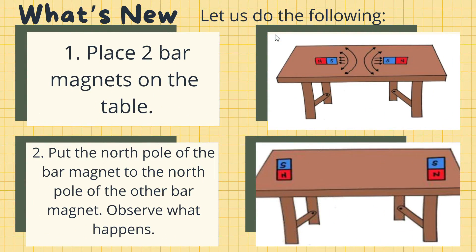Now class, get your magnets, let's do an activity. First, place two bar magnets on the table. Then, put the north pole of the bar magnet to the north pole of the other bar magnet. Observe what happens.